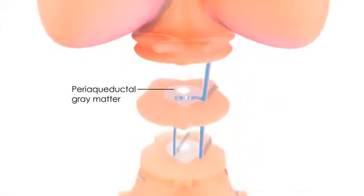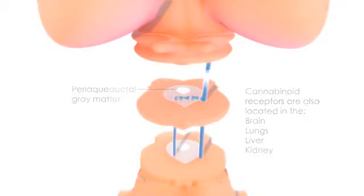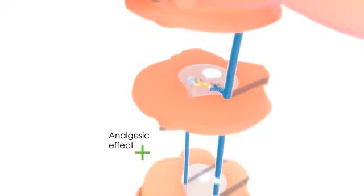The ascending pathway also relays to the periaqueductal gray matter, an important part of the descending pain modulating system, where specific cannabinoid receptors are located. Stimulation of the periaqueductal gray is known to produce an analgesic effect.